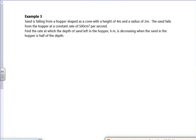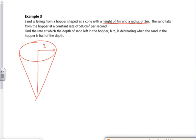Right, let's have a look at this next example. Oh, this sand hopper one is awesome. Right, so what do we know? So sand is falling from a hopper shaped as a cone with a height of 4 meters and a radius of 2. So I've got something in reality that looks like that. It starts off with a radius of 2 and a height of 4. That's when it's full. And sand falls from the hopper at a constant rate of 500 cm³ per second.